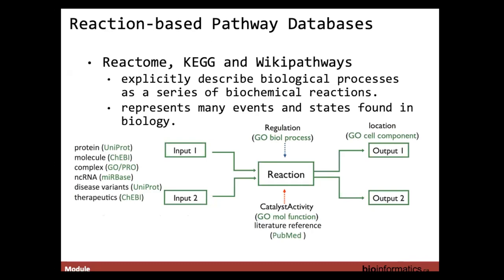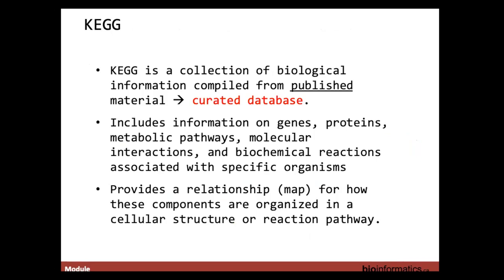The gold-standard pathway databases include Reactome, KEGG, and WikiPathways — reaction-based pathway databases where each node represents a biomolecule and each edge represents the conversion of one or more biomolecules into another via a reaction. Multiple entity databases are used to reference and describe molecules, and things like Gene Ontology terms and PubMed citations explicitly describe key elements of each reaction. Reactions become modules that build the pathway.